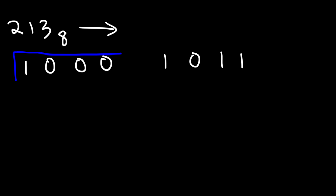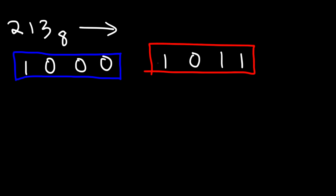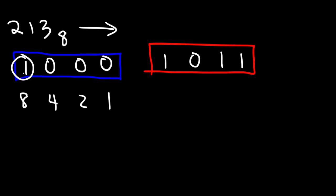So now let's convert each group of 4 into a number. The first digit corresponds with 2 to the 0, which is 1; the second with 2 to the first power, which is 2; then 2 squared is 4; and 2 to the third is 8. We have a 1 next to the 8, so 1 times 8 is 8. Everything else has a 0, so this whole first group is just 8.